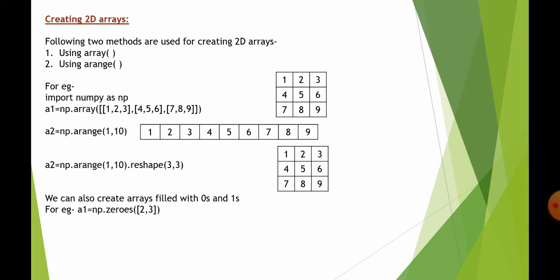We can also create arrays filled with 0s and 1s. For example, a1 = np.zeros((2,3)) — here 'zeros' means all elements will be 0, with 2 rows and 3 columns. Similarly, a2 = np.ones((2,3)) — here all elements will be 1, with the same dimensions of 2 rows and 3 columns.